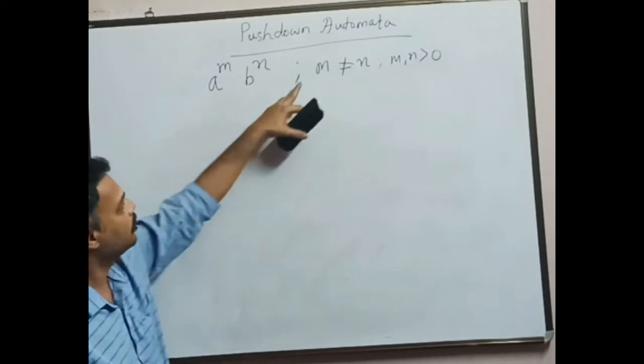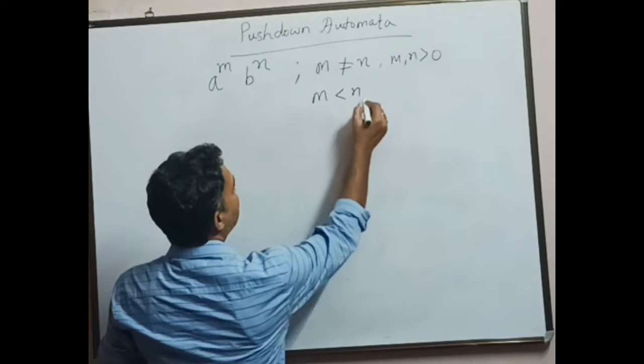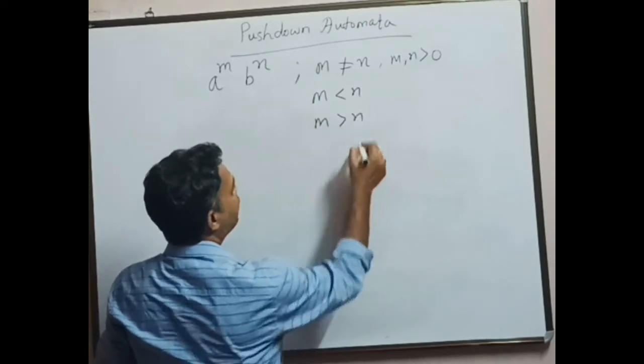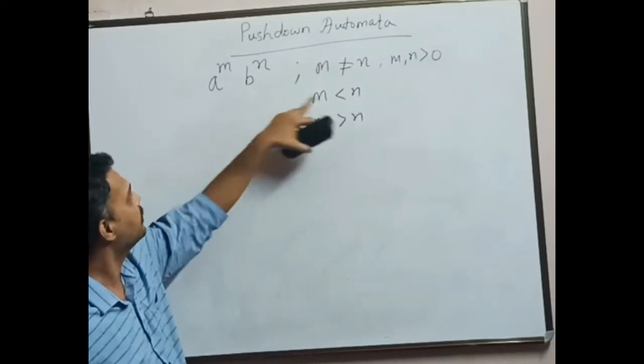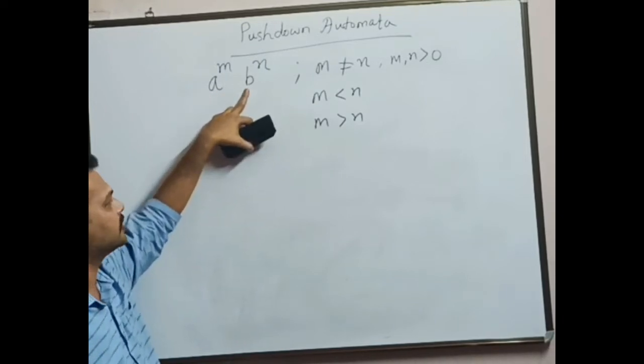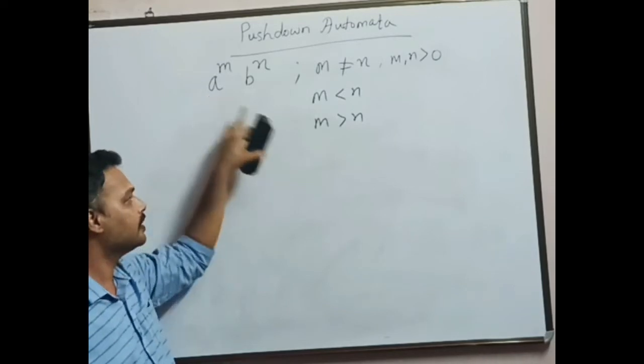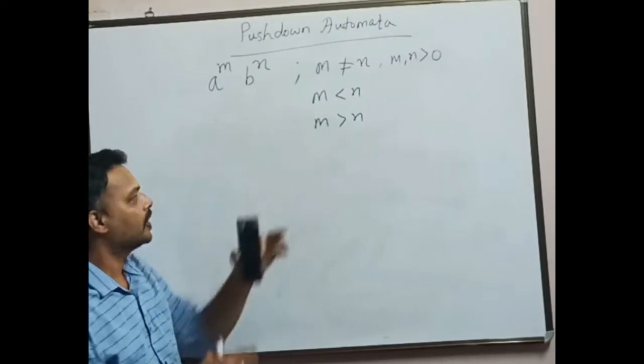Now m not equal to n means either it can be m less than n or m greater than n. If m less than n, that means the number of a's are less than the number of b's in the string. If m greater than n, the number of a's are greater than the number of b's.